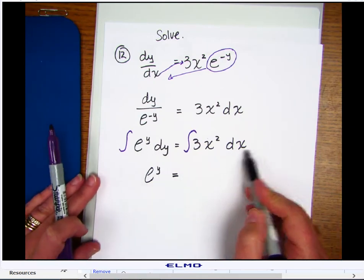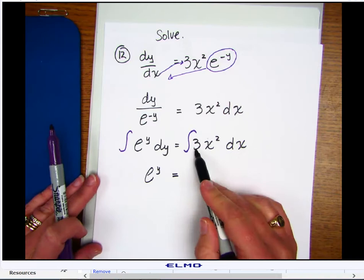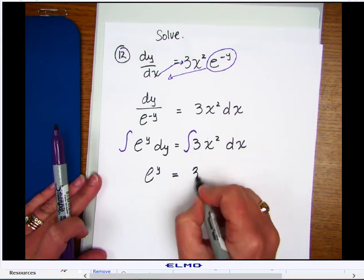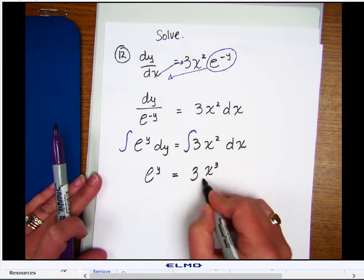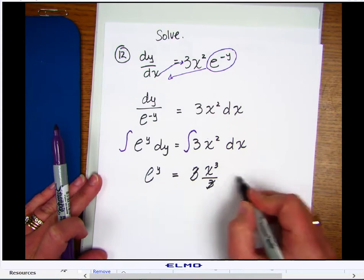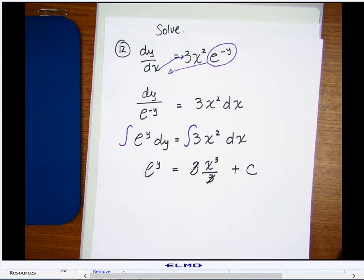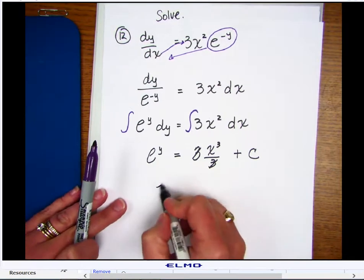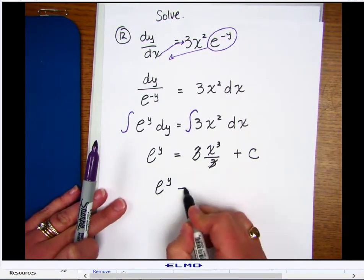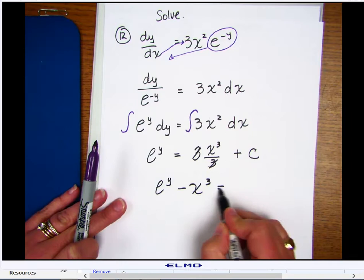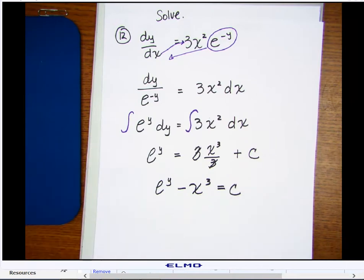Over here, I have dx, so I'm good there, and the integral of 3x squared would yield 3x cubed over 3. Notice that these would cancel. And whenever I integrate, I've got to add the coefficient. So this would become e to the y, I can subtract the x cubed from each side, and that would be equal to my constant c.